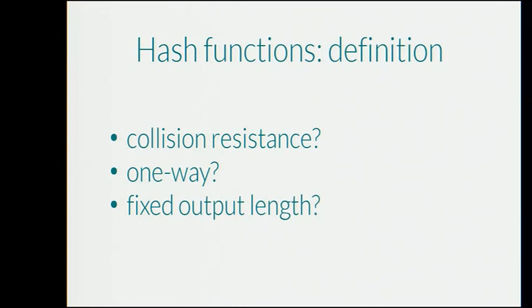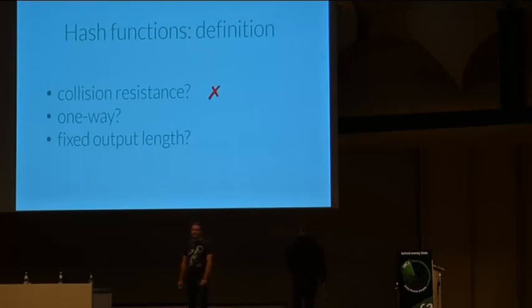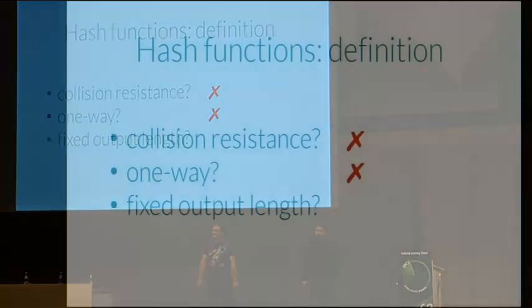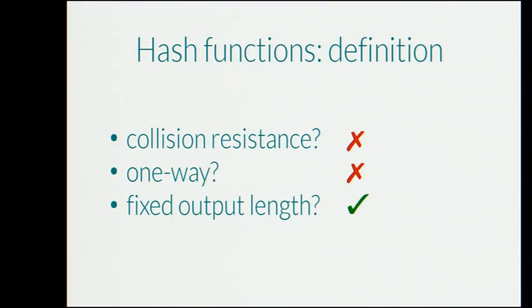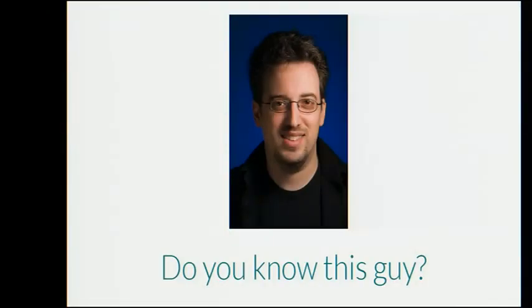To do this attack, you need hash functions. Who thinks collision resistance is part of the definition of a hash function? A few people think so — maybe 20 — but that's not actually the case. Collision resistance is not part of the definition of a hash function. Who thinks one-wayness is part of the definition? No one, apparently. Fixed output length is the only thing that is actually part of the definition of a hash function. All the other properties you may have heard about — that's when we talk about a cryptographic hash function, which is not what's used for string hashing.